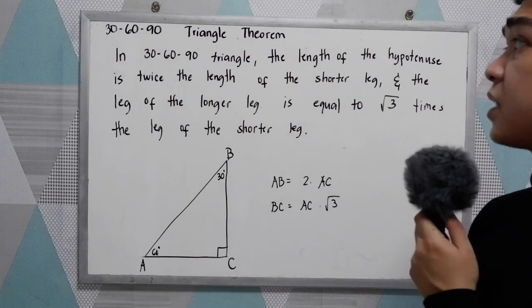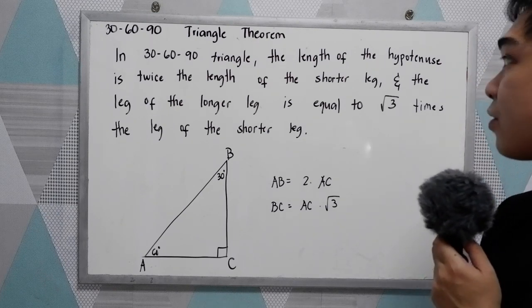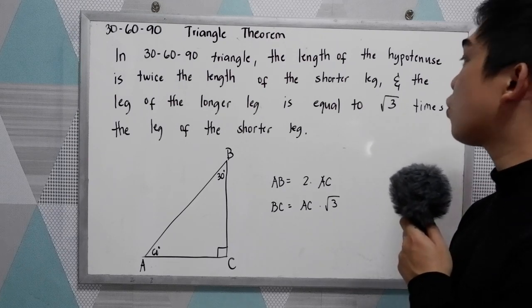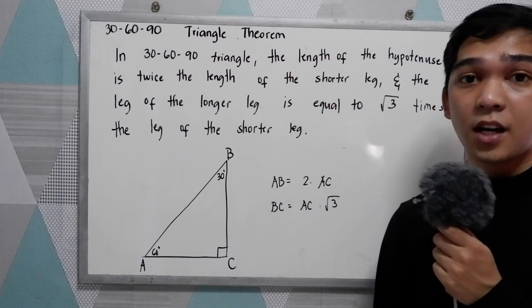So in a 30, 60, 90 triangle, the length of the hypotenuse is twice the length of the shorter leg. And the length of the longer leg is equal to the square root of 3 times the leg of the shorter leg.